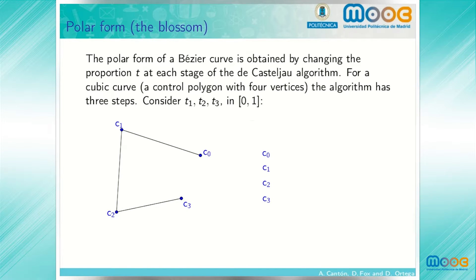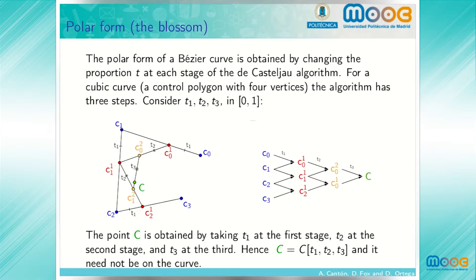We consider three proportions t sub 1, t sub 2, t sub 3. In the first step we subdivide the segments in proportion t sub 1 and the second step in the proportion t sub 2 and in the third step in the proportion t sub 3. Again, we obtain a point denoted c and indicate it in green. We can indicate it as c is a function of t sub 1, t sub 2, t sub 3.